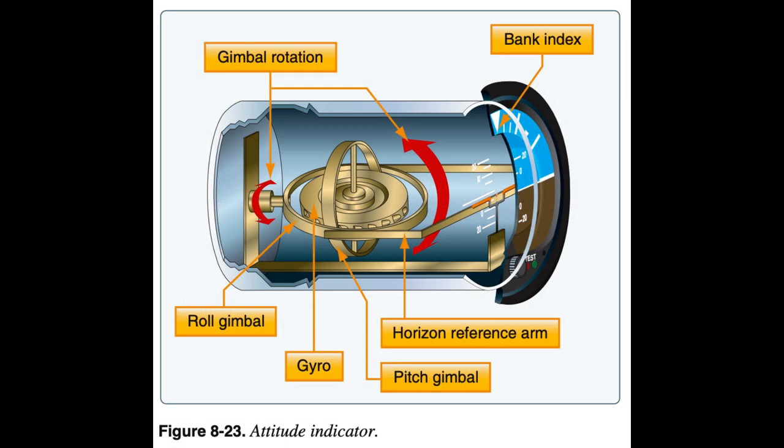The attitude indicator, with its miniature aircraft and horizon bar, displays a picture of the attitude of the aircraft. The relationship of the miniature aircraft to the horizon bar is the same as the relationship of the real aircraft to the actual horizon. The instrument gives an instantaneous indication of even the smallest changes in attitude. The gyro in the attitude indicator is mounted in a horizontal plane and depends upon rigidity in space for its operation.